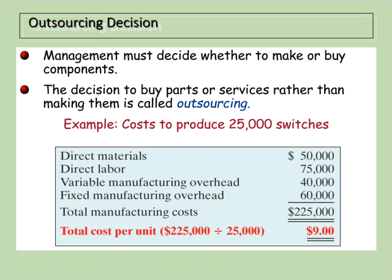Some of the questions that managers need to consider are how to best use available resources: how do variable costs compare to the outsourcing cost, are there any avoidable fixed costs if we outsource, and what can we do with the free capacity? Almost any business activity can be outsourced — for example, manufacturing, marketing, payroll. Companies often choose to retain only their core competencies and outsource just about everything else to companies that can do it better.